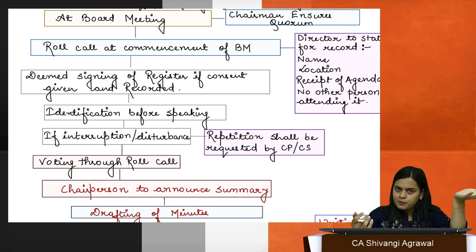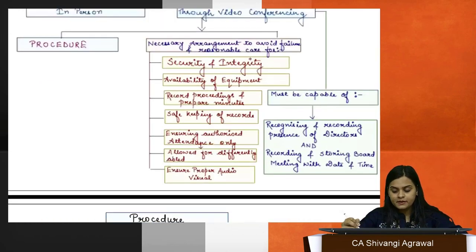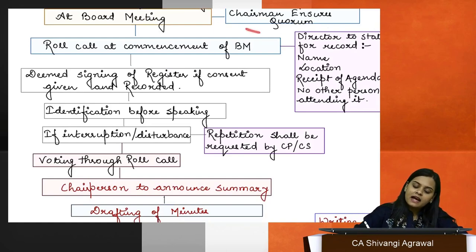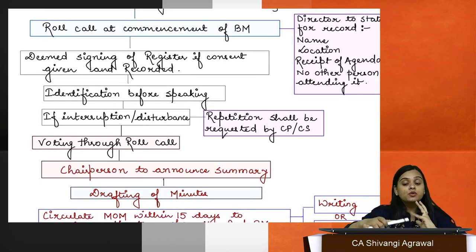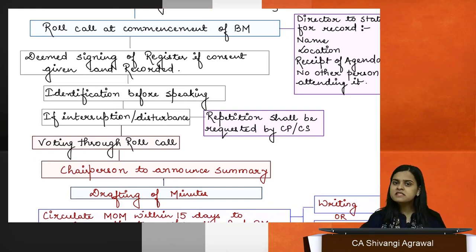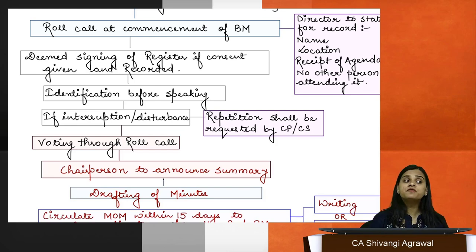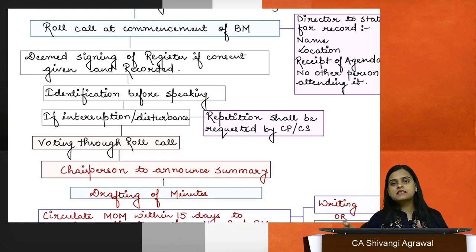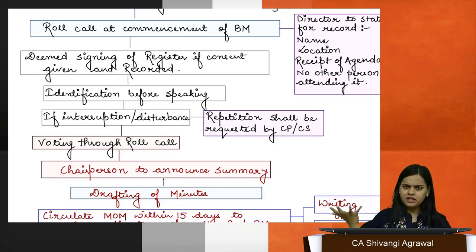At the board meeting, the chairman ensures quorum. Quorum is the minimum number of directors required to constitute a meeting — only then can the meeting proceed. Directors who are physically present as well as directors virtually present are both counted for the purpose of quorum. It may be that all directors are virtually present, or some are physical and some are on VC. Both count equally toward quorum.